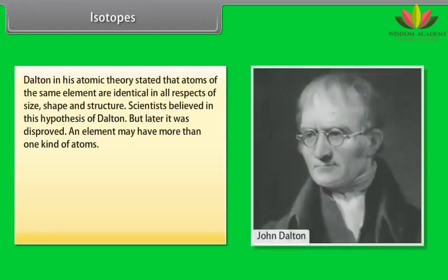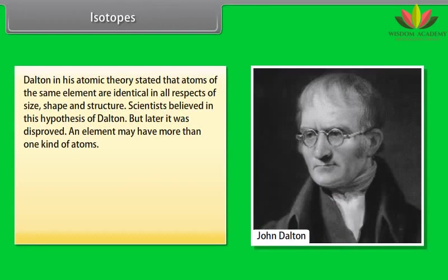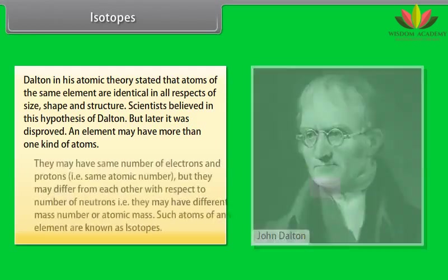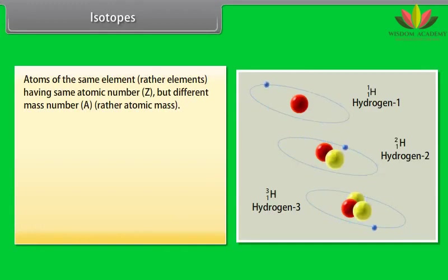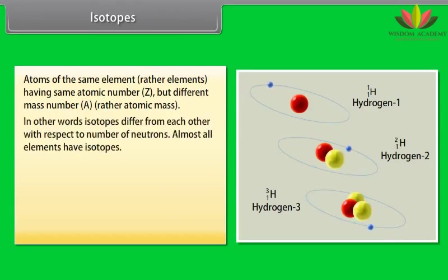Isotopes. Dalton in his atomic theory stated that atoms of the same element are identical in all respects of size, shape and structure. Scientists believed in this hypothesis of Dalton but later it was disproved. An element may have more than one kind of atoms. They may have same number of electrons and protons, that is, same atomic number, but they may differ from each other with respect to number of neutrons, that is, they may have different mass number or atomic mass. Such atoms of an element are known as isotopes. Atoms of the same element having same atomic number, Z, but different mass number, A. In other words, isotopes differ from each other with respect to number of neutrons.